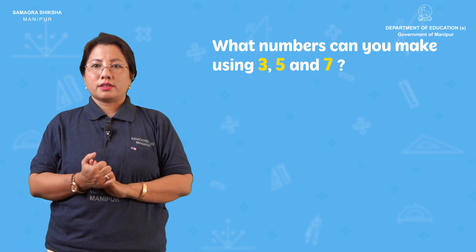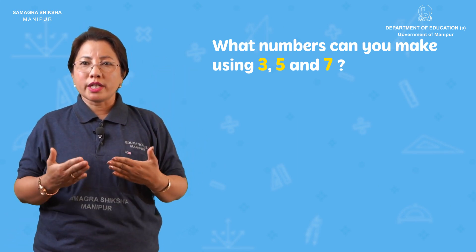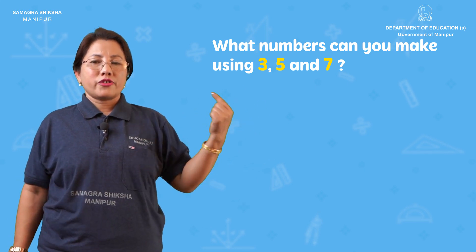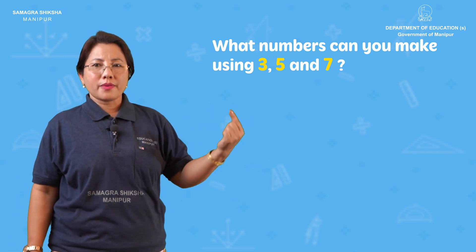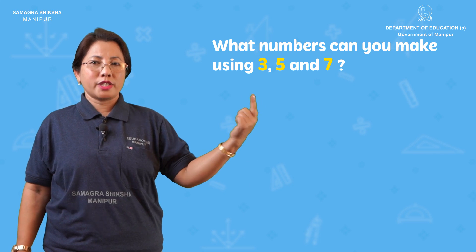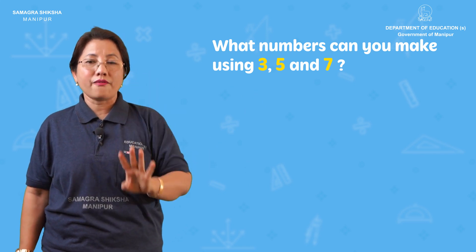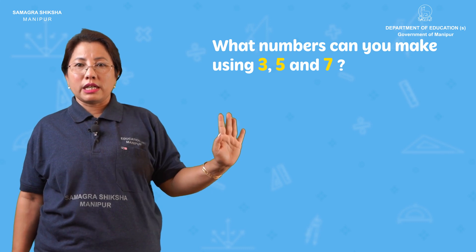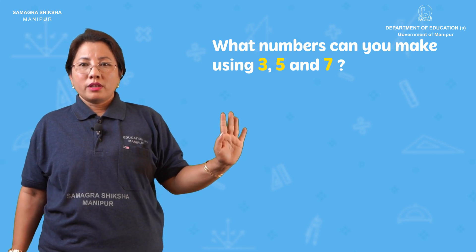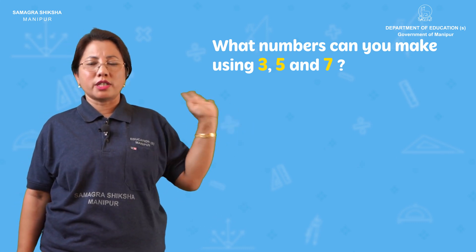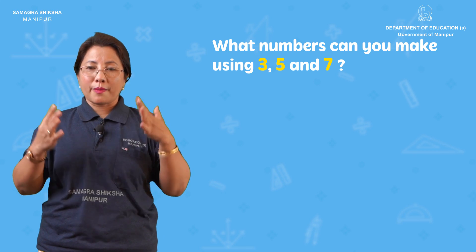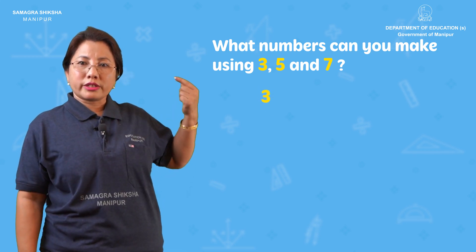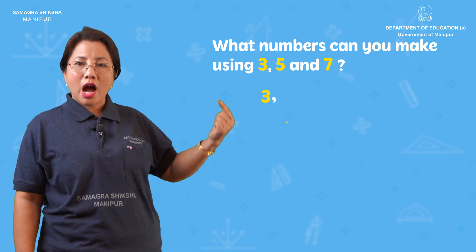What numbers can you make using 3, 5, and 7? Using these three digits you can make different numbers. Within each arrangement you can use 3, 5, and 7 in different positions.